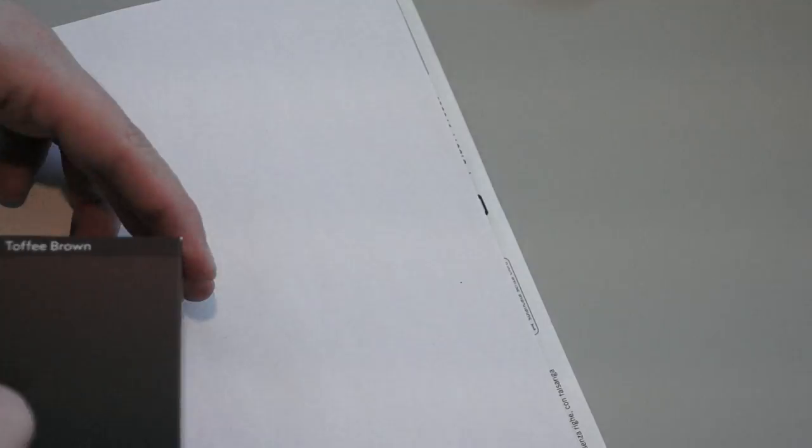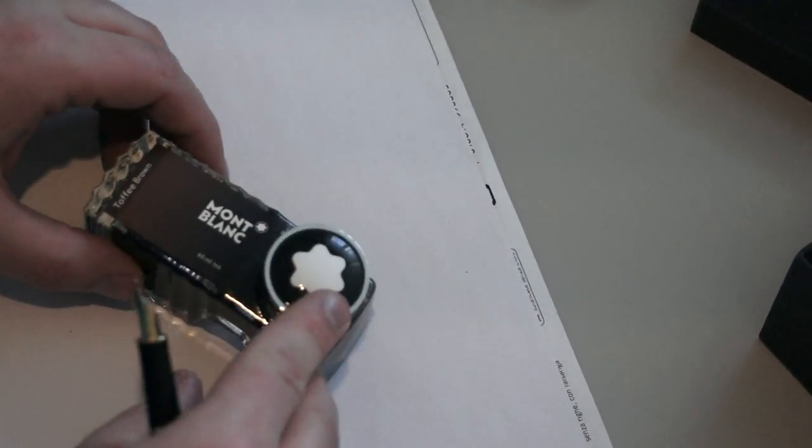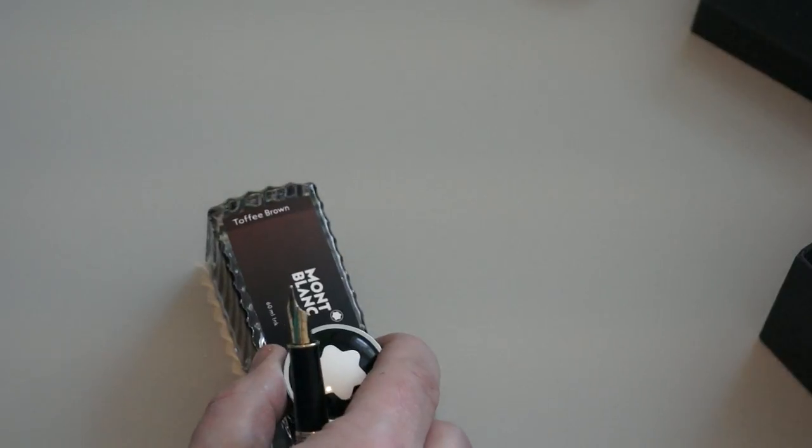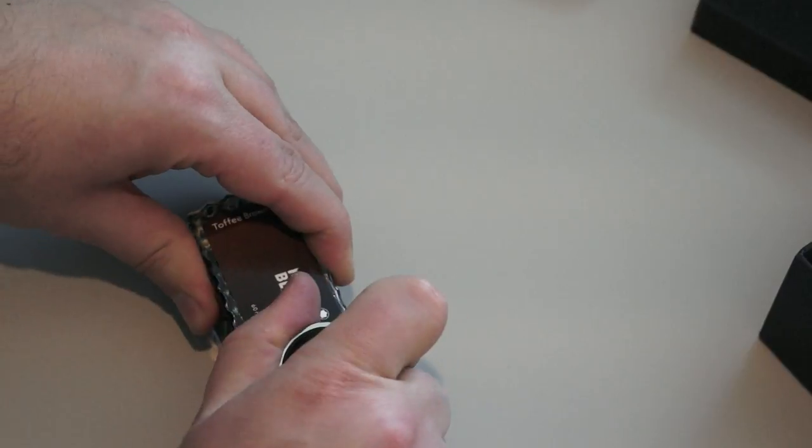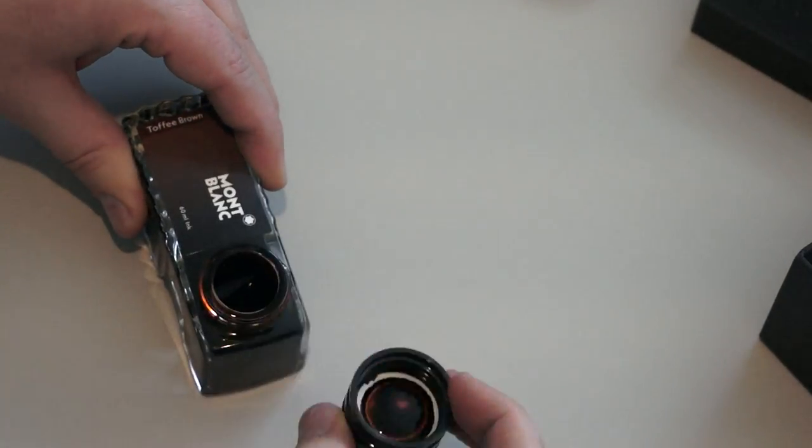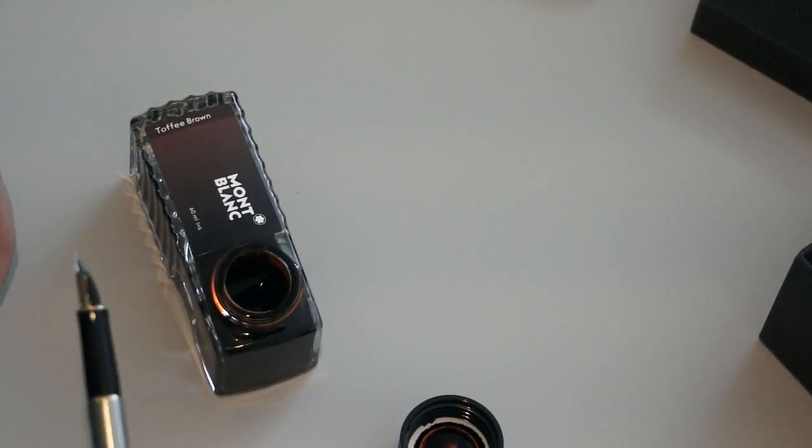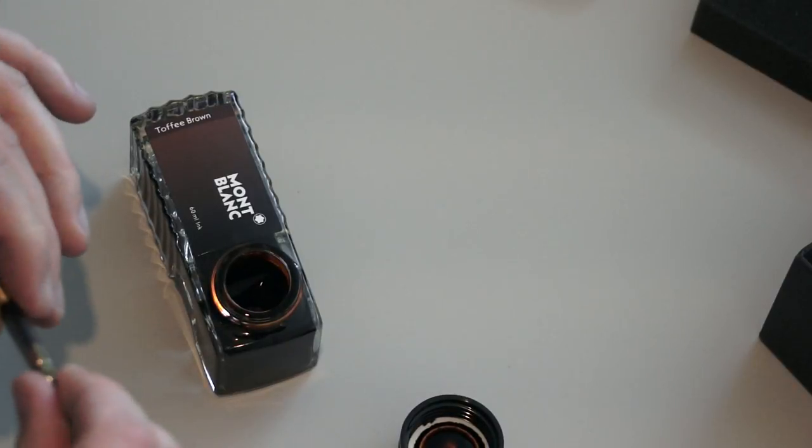Now this pen is now un-inked. So I'm gonna do a sample writing and I'm gonna use Mont Blanc ink, the toffee brown version. I like very much this color and it's a great ink. I recommend you should try. So now I'm gonna ink the pen with this ink. As you can see I've never opened this one, so it's a brand new bottle of ink from Mont Blanc. And next we are gonna ink the pen with this ink. I think it looks beautiful.